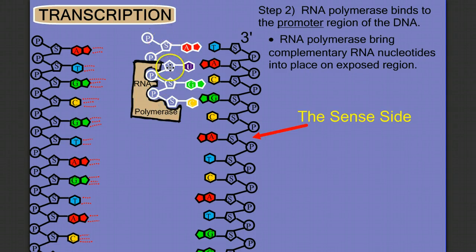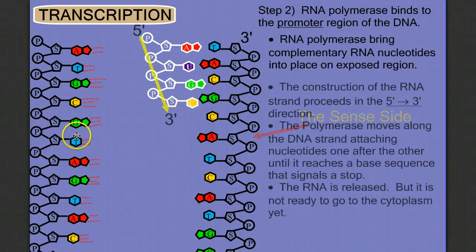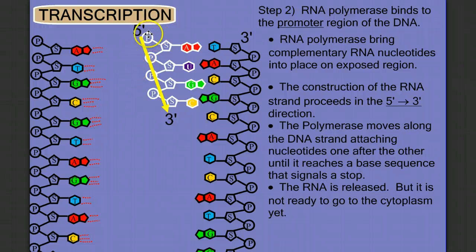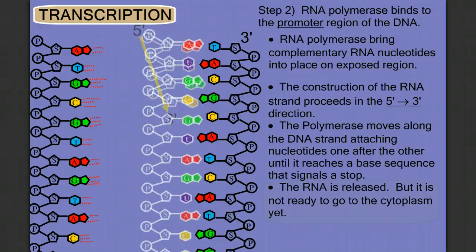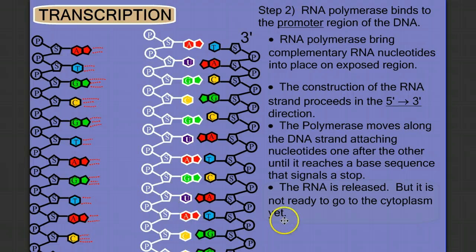So what we're building here is our single strand of messenger RNA. And this construction is occurring in the 5' to 3' direction, from the phosphate end of the nucleotide strand to the sugar end. And the polymerase will continue building down, and I'll go ahead and just finish this off, and finish building our messenger RNA strand. However, once we build this strand, it's not really ready to go out to the cytoplasm yet. We have another very important step.